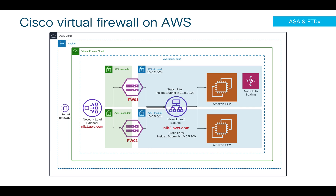The flow is: if a user would like to access these applications, that traffic will come through the internet gateway towards my network load balancer, which is my public-facing network load balancer nlb1.aws.com.